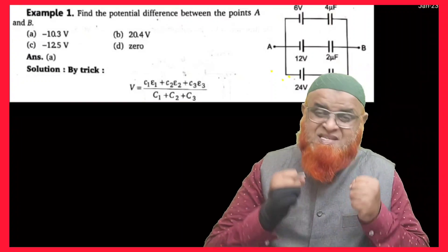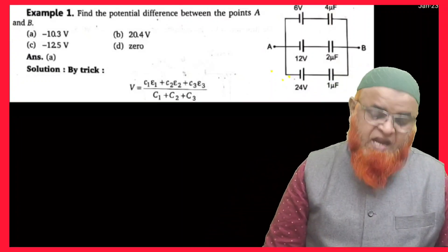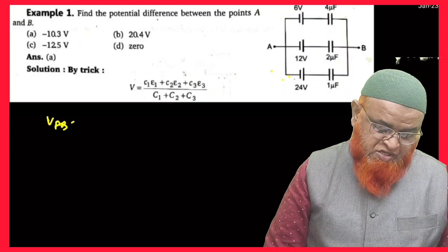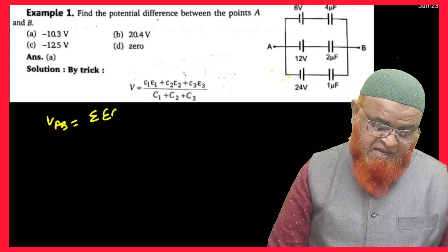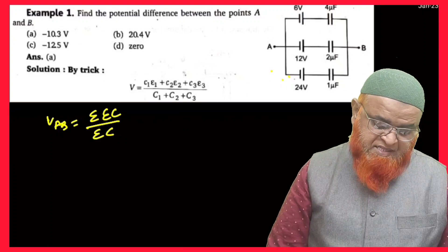But he's asking us to find out what is the potential across A and B. So for that, you can just take potential across AB as Sigma EC by Sigma C.